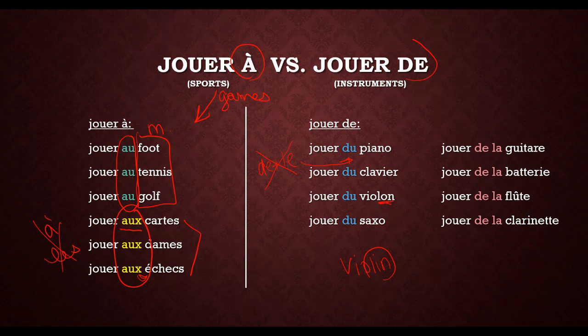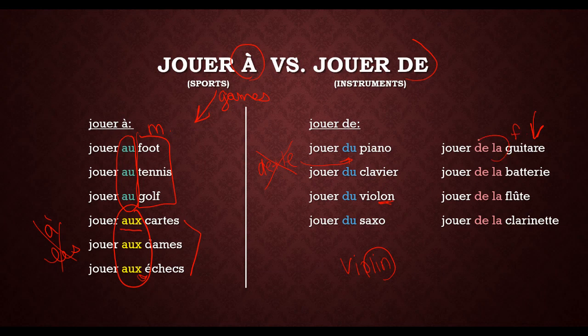For the feminine instruments it's going to be jouer de la: jouer de la guitare, jouer de la batterie — which is drums — jouer de la flûte, and jouer de la clarinette. Because all of these instruments are feminine, we use de la.